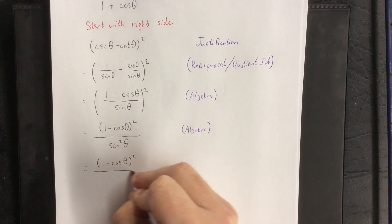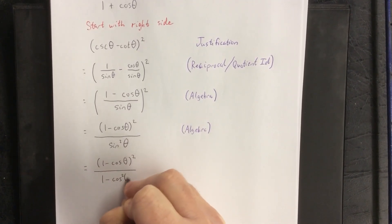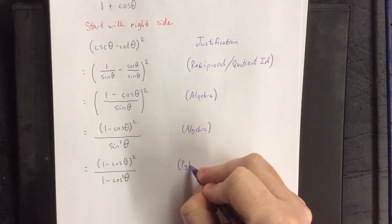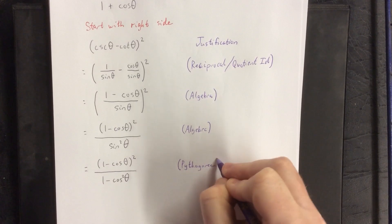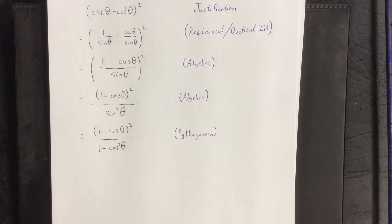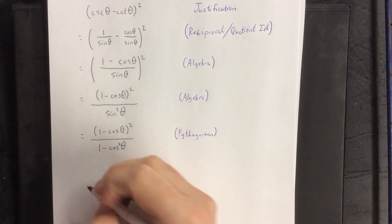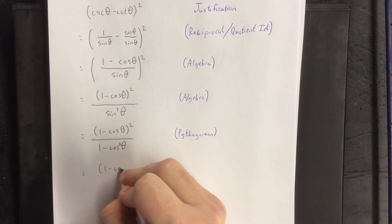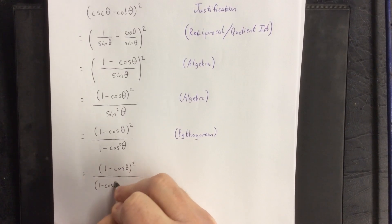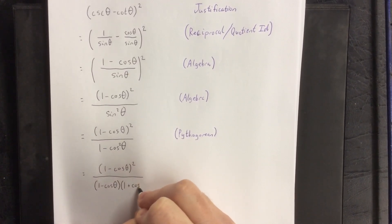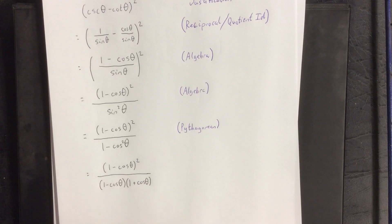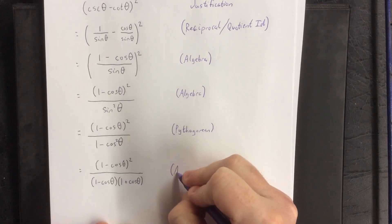I want my final answer to have the only trig function present be the cosine of theta. Anytime we see perfect squares, we should consider the potential for a Pythagorean identity, and I'll use that on the denominator — that's a Pythagorean identity step. We now have a difference of two squares in the denominator, and a difference of two squares factors into binomial conjugates. The denominator factors nicely into one minus cosine of theta times one plus cosine of theta. That's a step of algebra — factoring.